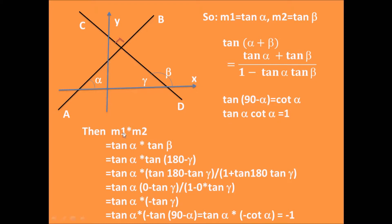So, the slope m1 times m2 equals tangent α times tangent β. However, from the graph we can see β plus γ equals 180. So, we can get m1 times m2 equals tangent α times tangent (180 - γ).